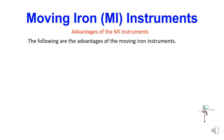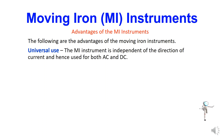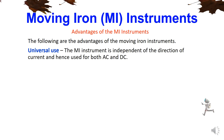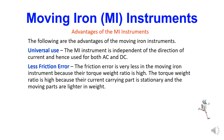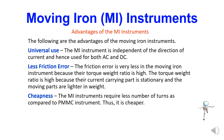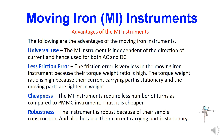Let us see the advantages of MI instruments. First, it can be used for universal use because both AC and DC can be measured. Less frictional error — the frictional error is very less in the moving iron instrument because the torque-weight ratio is high; the current-carrying part is stationary and the moving parts are light in weight. Cheapness — MI instruments require fewer turns compared to PMMC instruments, making them cheaper. Robustness — the instrument is robust because of simple construction and because the current-carrying part is stationary.